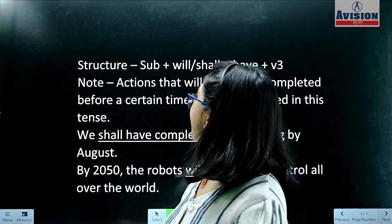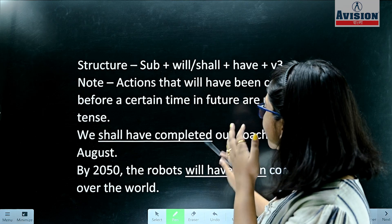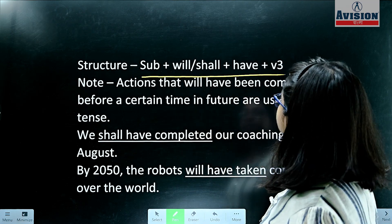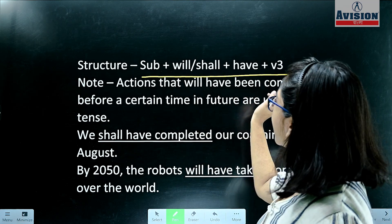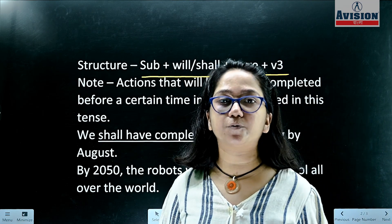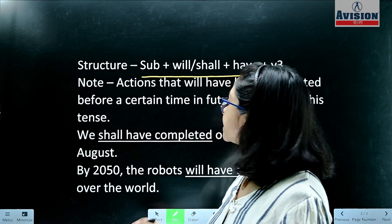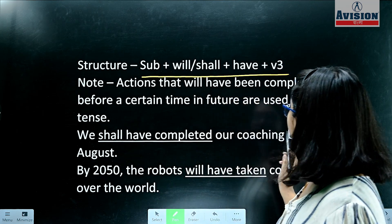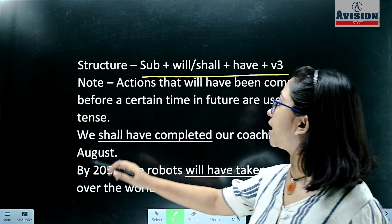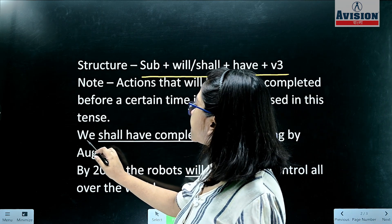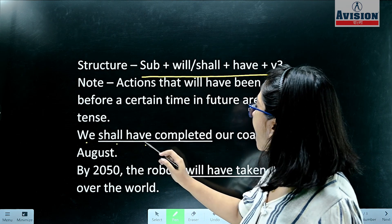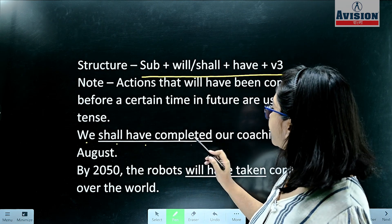Look at this, we have a structure. The structure is: subject plus will/shall plus have plus V3. For example: 'We shall have completed our coaching by August.' Here you can identify the subject, shall, have, and V3.